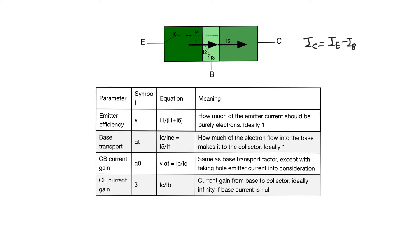The first efficiency parameter is gamma, called the emitter efficiency. It defines the ratio of the emitter current formed of electrons in an NPN — basically I1 divided by I1 plus I6 — and ideally it should be close to one because we want the emitter current to be mostly electron current. We know without calculation that this will happen if emitter doping is much higher than base doping.